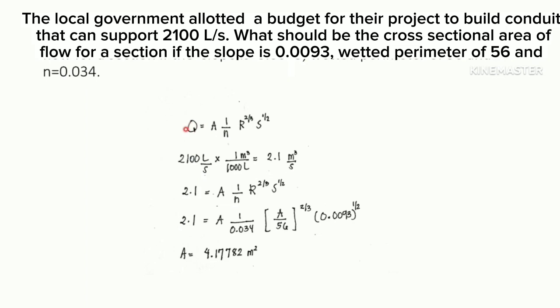We can actually find the cross-sectional area of flow by using the Manning formula. The Manning formula for discharge is equal or proportional to the product of area times one over roughness times the hydraulic radius raised to two-thirds and the slope raised to one-half.